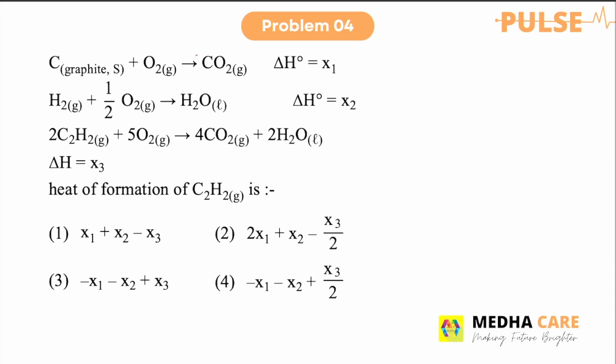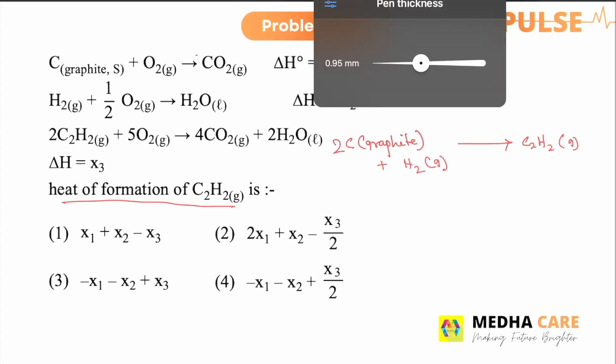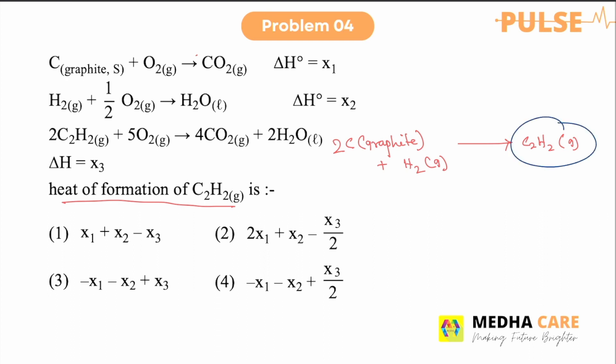Let us see problem number 4. So this question is based on Hess's law. So we have to find out the heat of formation of C2H2. So if we write the reaction for formation of C2H2, the C2H2 gas, it is formed from carbon graphite and hydrogen gas.